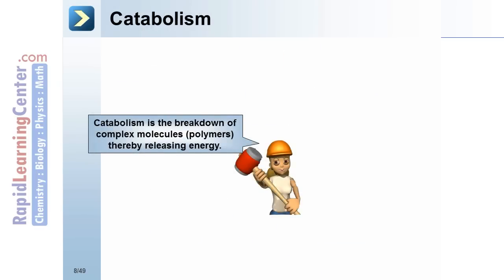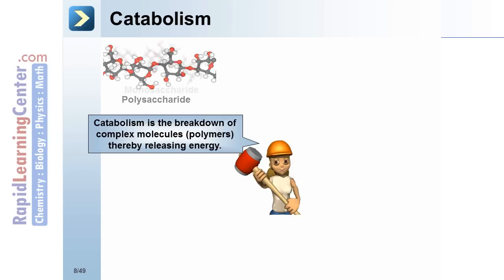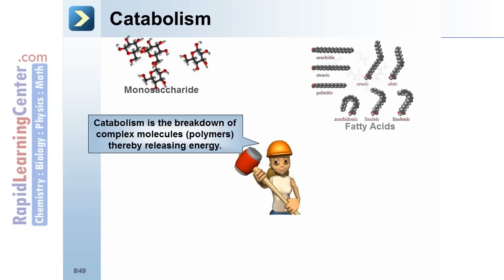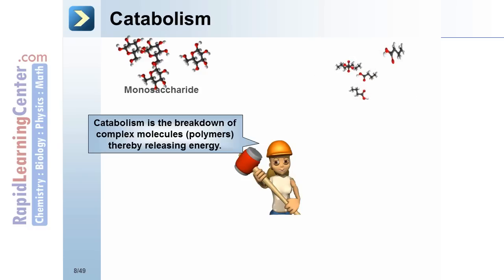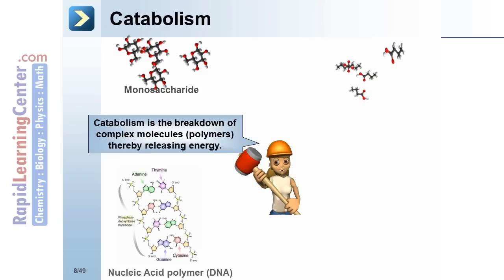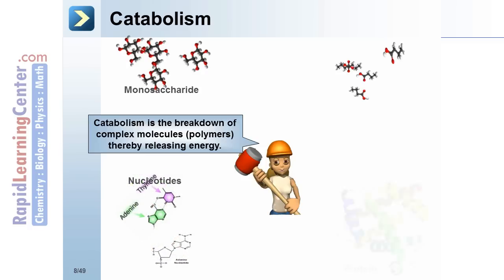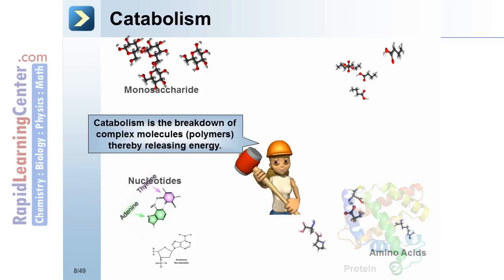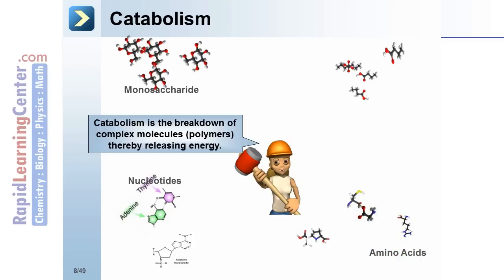Catabolism is the breakdown of complex molecules — polymers — thereby releasing energy. For example, a polysaccharide broken down into monosaccharides is catabolism. Lipids break down into fatty acids. Nucleic acid polymers break down into nucleotides. And proteins break down into amino acids as their catabolism breakdown products.